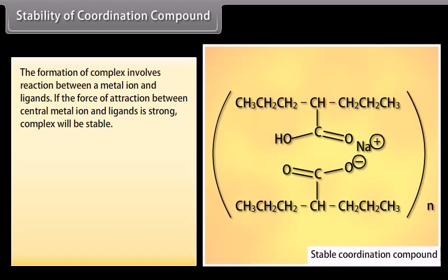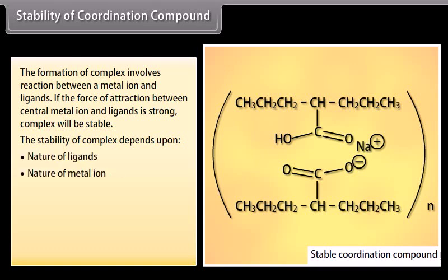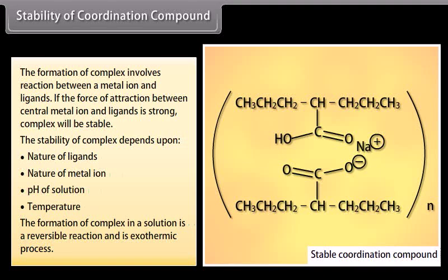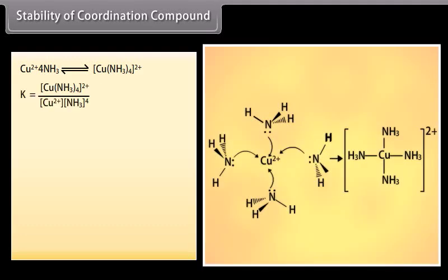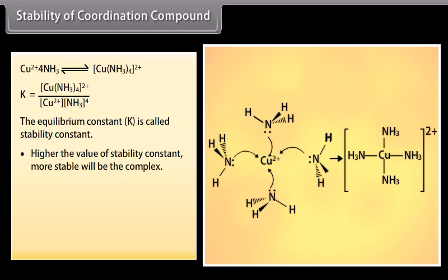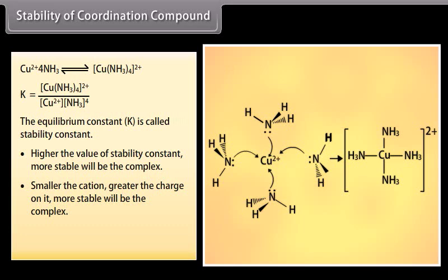Stability of Coordination Compounds. The formation of a complex involves reaction between a metal ion and ligands. If the force of attraction between the central metal ion and ligands is strong, the complex will be stable. Stability depends on the nature of ligands, nature of the metal ion, pH of solution, and temperature. The formation of a complex in solution is a reversible and exothermic process. The equilibrium constant K is called the stability constant. Higher the value of the stability constant, more stable the complex. Smaller the cation with greater charge, and stronger the ligand, the more stable will be the complex.